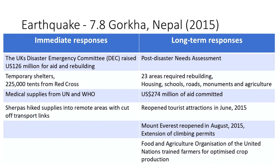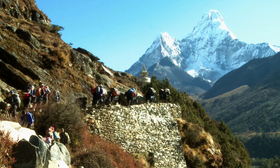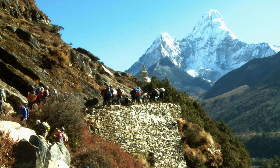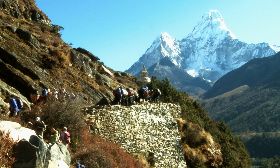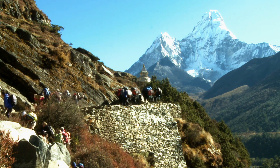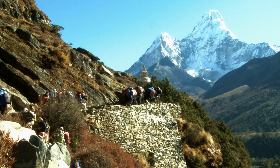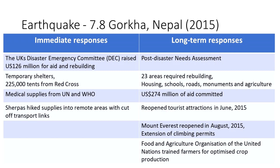Immediate responses saw lots of international aid, temporary shelters were set up, and the Red Cross was searching for survivors. It was also very difficult to get help and aid to very remote areas because travelling was severely affected. Some of the long-term responses involved lots of aid and help from many different countries around the world.